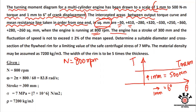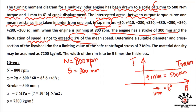The engine has a stroke length of 300 mm. The fluctuation of speed must not exceed plus or minus 2 percent of mean speed. This is actually very important.